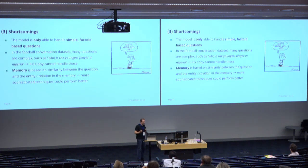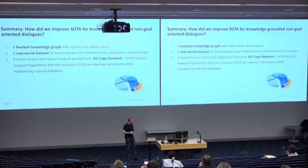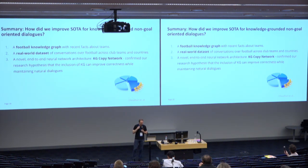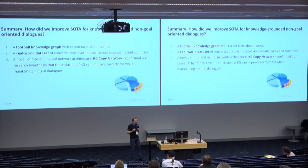The system can do some things well; however, at this stage it is also quite limited — it is a first step toward approaching a very significant challenge. Currently, it can only handle simple questions. If you ask something like 'Who is the youngest player in Nigeria?' it cannot handle it because there is no support for aggregations or more complex queries. In summary, our three contributions are: a new knowledge graph for football; a new training dataset of around 3,000 conversations about football, reusable for other researchers; and the KG Copy network, which confirmed our research hypothesis — by including a knowledge graph into a generative system, we significantly improved accuracy while still producing natural responses.